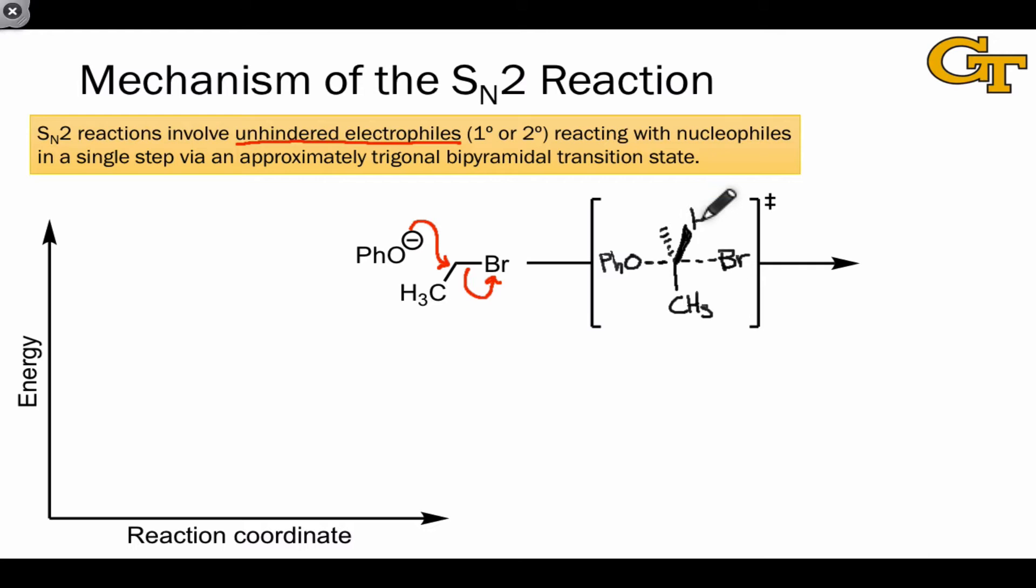Here, a CH3 group and two hydrogens are linked to the electrophilic carbon in addition to the bromine atom. In the products of this step, the phenoxide group is linked to the electrophilic carbon, and Br- is a byproduct. Notice that negative charge is transferred from phenoxide in the starting materials to bromide in the products.